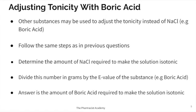Keep in mind that you can also adjust tonicity with other substances — one common one is boric acid. Follow the same steps as in the previous questions: determine the amount of sodium chloride required to make the solution isotonic, subtract whatever the active substance is already contributing, and then divide that remaining number in grams by the E value of boric acid. The answer will be the amount of boric acid required to make the solution isotonic.